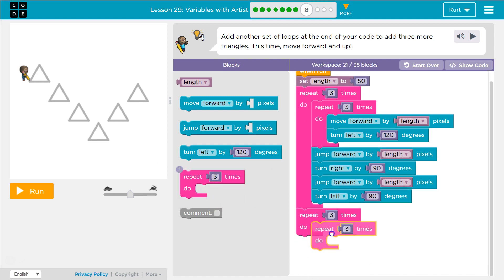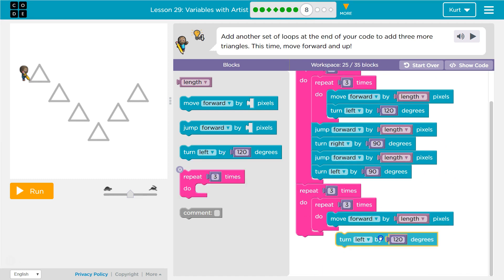The first repeat will be to draw the triangles. This repeats just to draw each individual side. So I want to move forward by our variable length, and again, every time you see that, you've got to think 50, because we set it to 50. And then I'm going to turn left, just like I do up here, by 120.